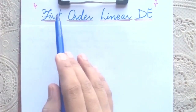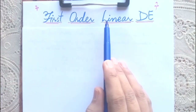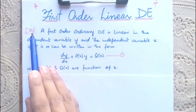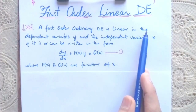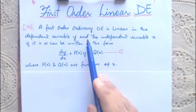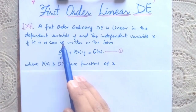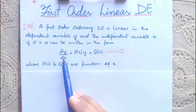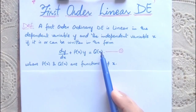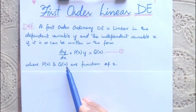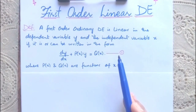Welcome to the formula foundation: first-order linear differential equations. A first-order ordinary differential equation is linear in the dependent variable y and the independent variable x if it is, or can be written in the form dy/dx + P(x)y = Q(x), where P(x) and Q(x) are functions of x.